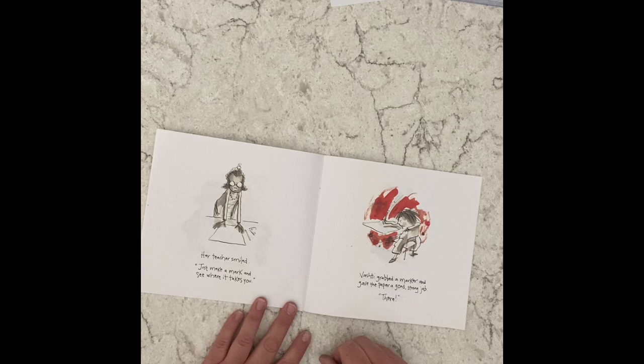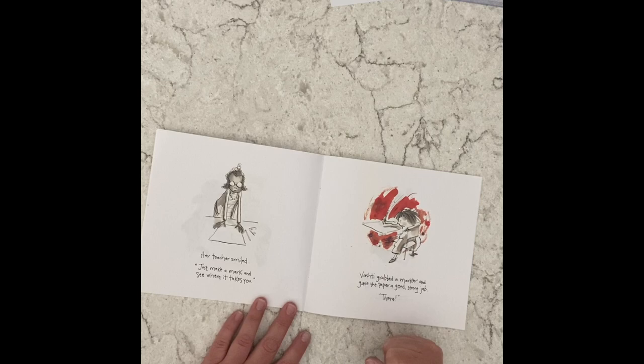Her teacher smiled. Just make a mark. See where it takes you. Vashti grabbed a marker and gave the paper a good, strong jab and said, there.